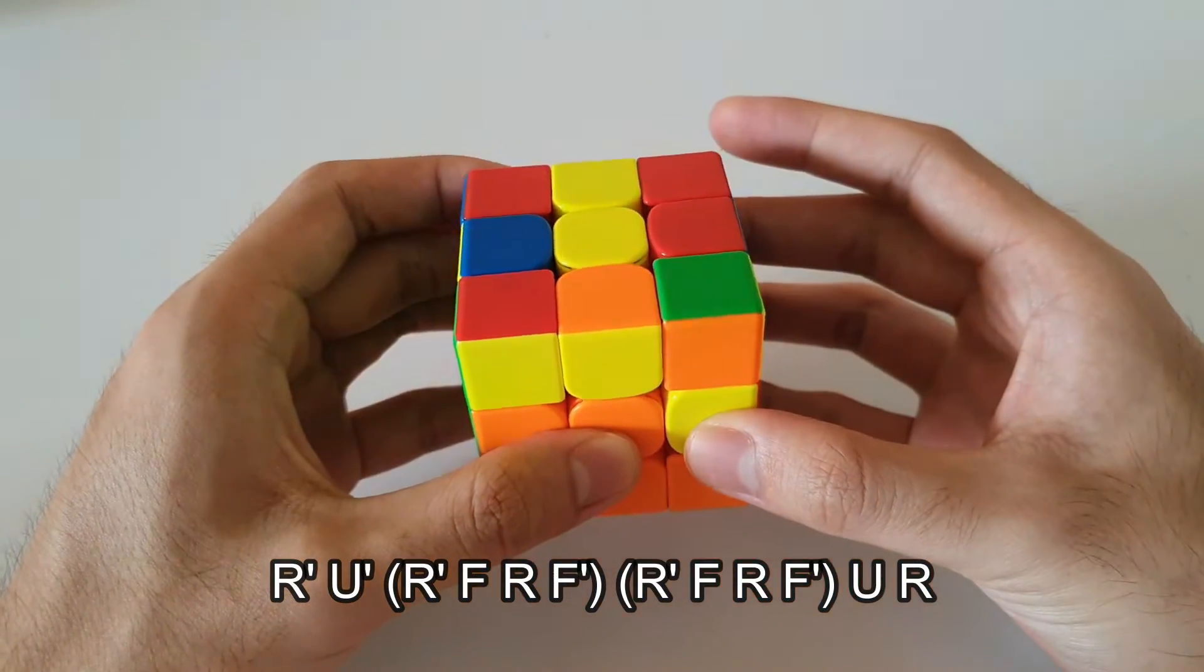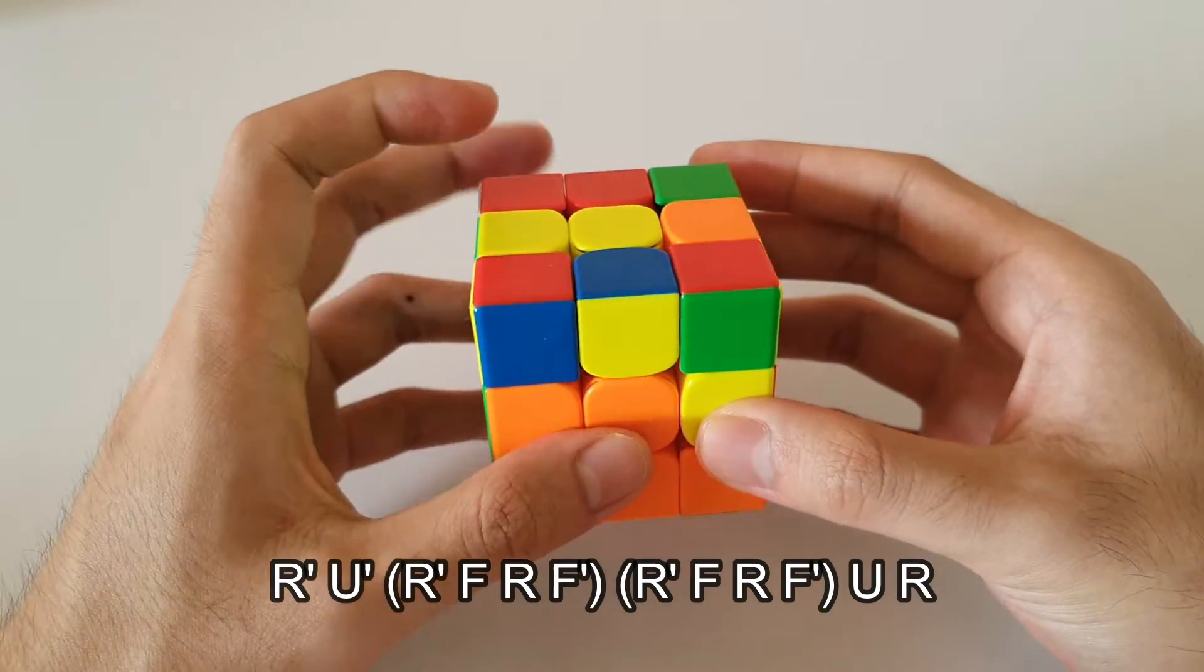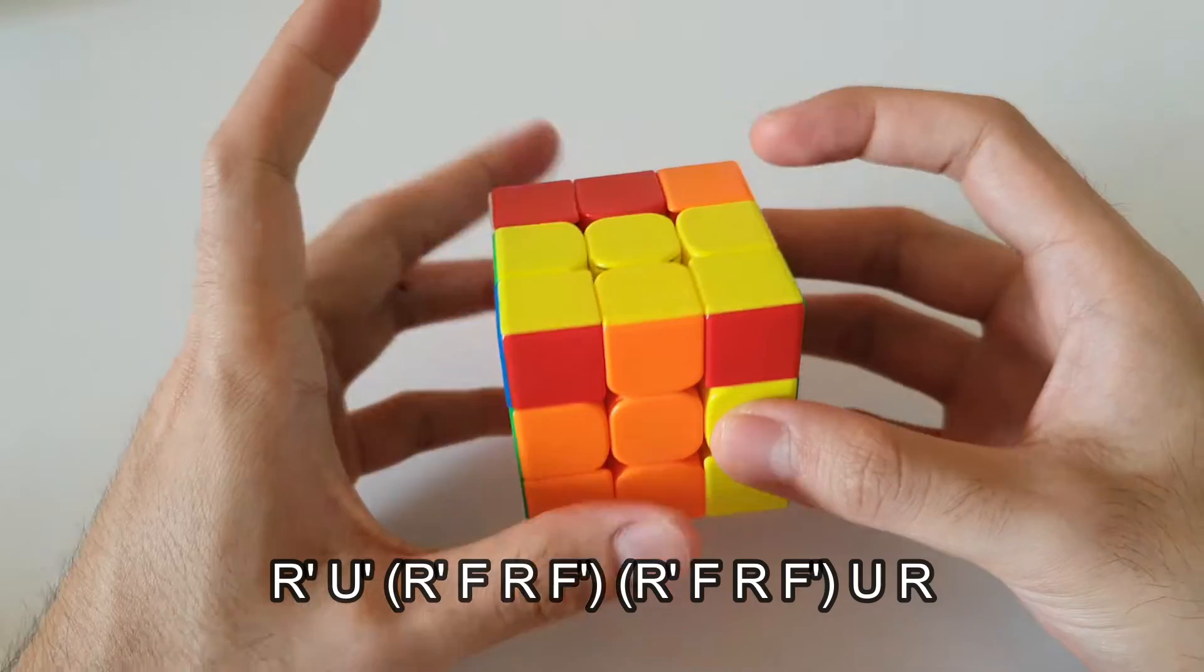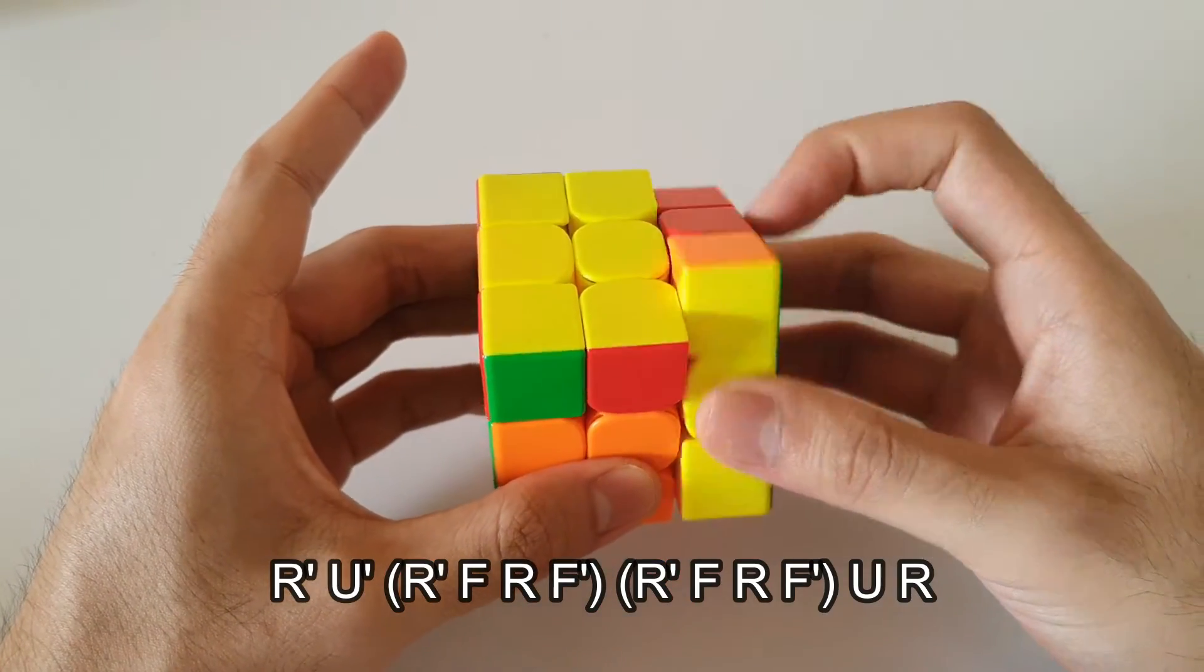Starts off with an R prime, U prime, followed by a double sledge, finishing off with a U followed by an R.